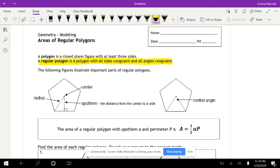The following figures illustrate important parts of regular polygons. On here we have our center of our circle. Oh, there it goes. Sorry. So that's the center. Then we have the R, which is a radius. So this is the radius of your polygon.